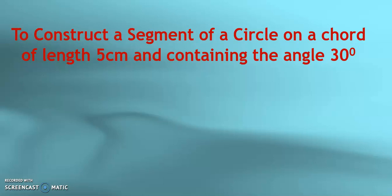Dear students, in this video, we are going to construct a segment of a circle on a chord of length 5 cm and containing the angle 30 degrees. That is, we need to construct a segment of a circle and the angle it should contain is 30 degrees.